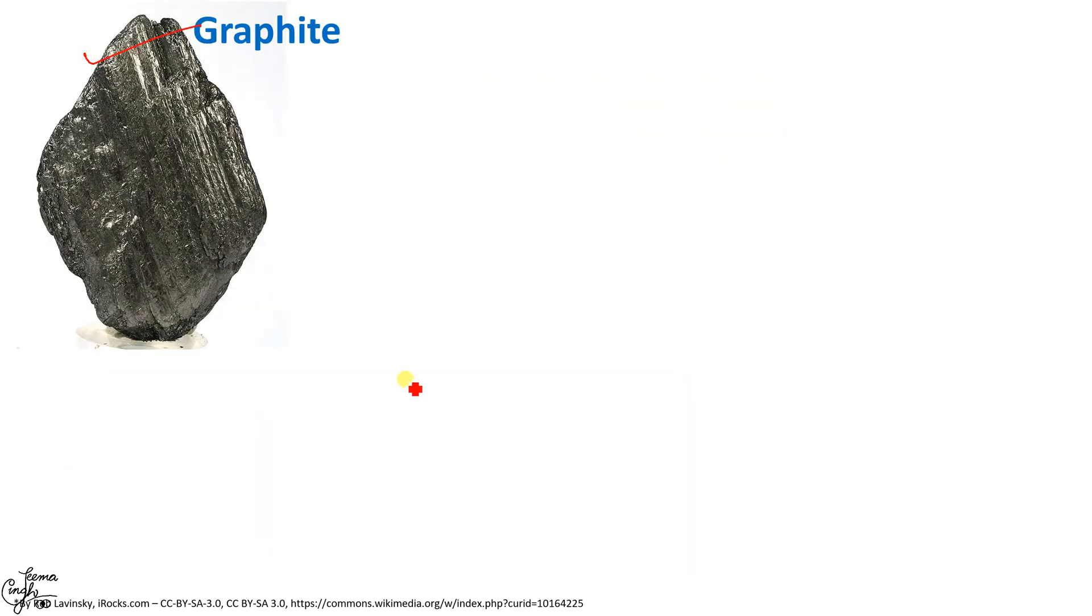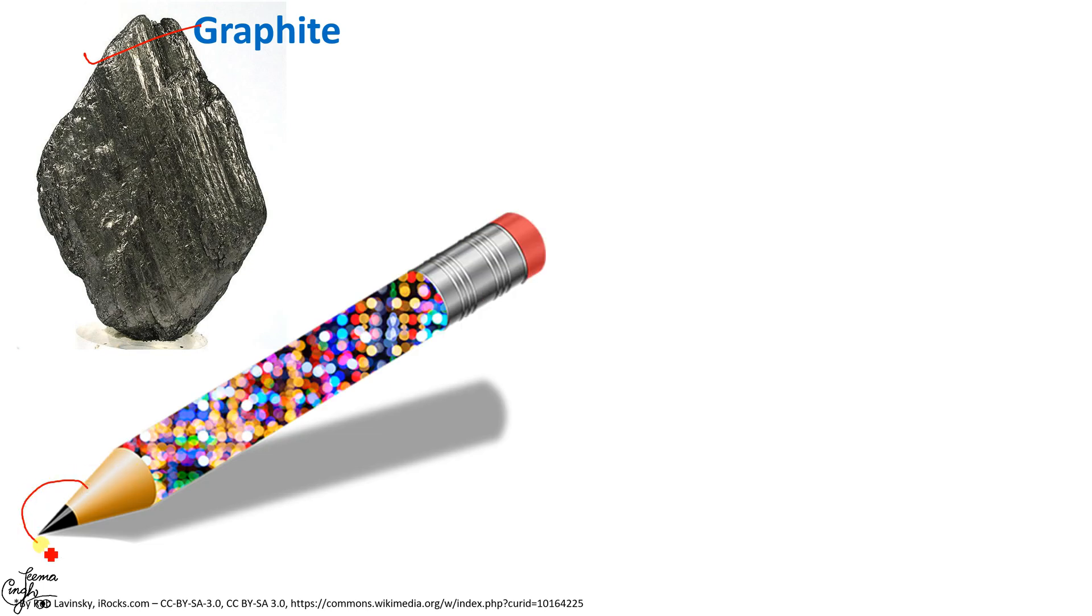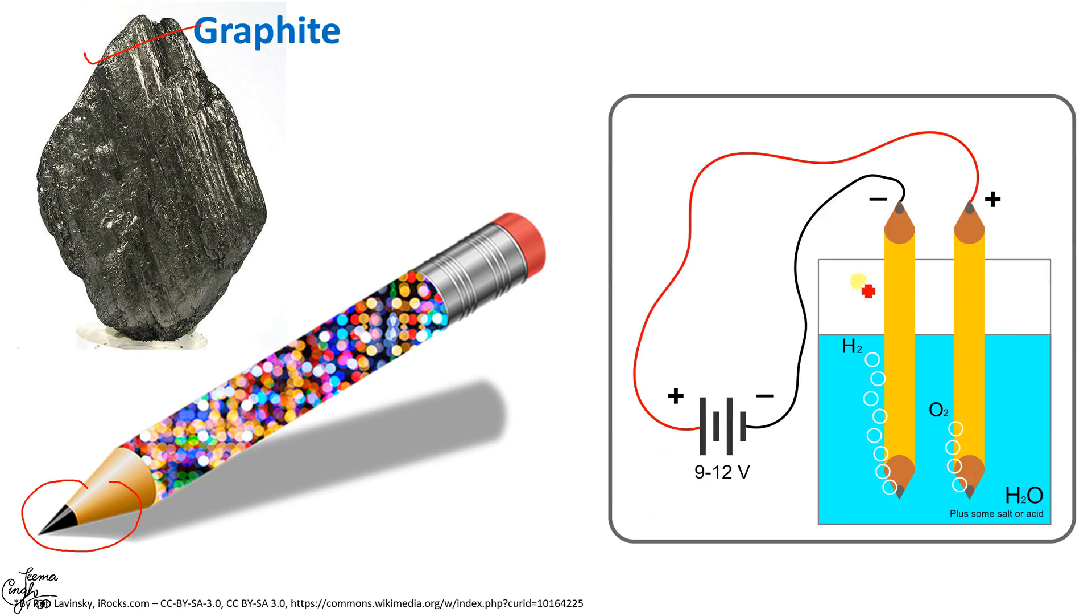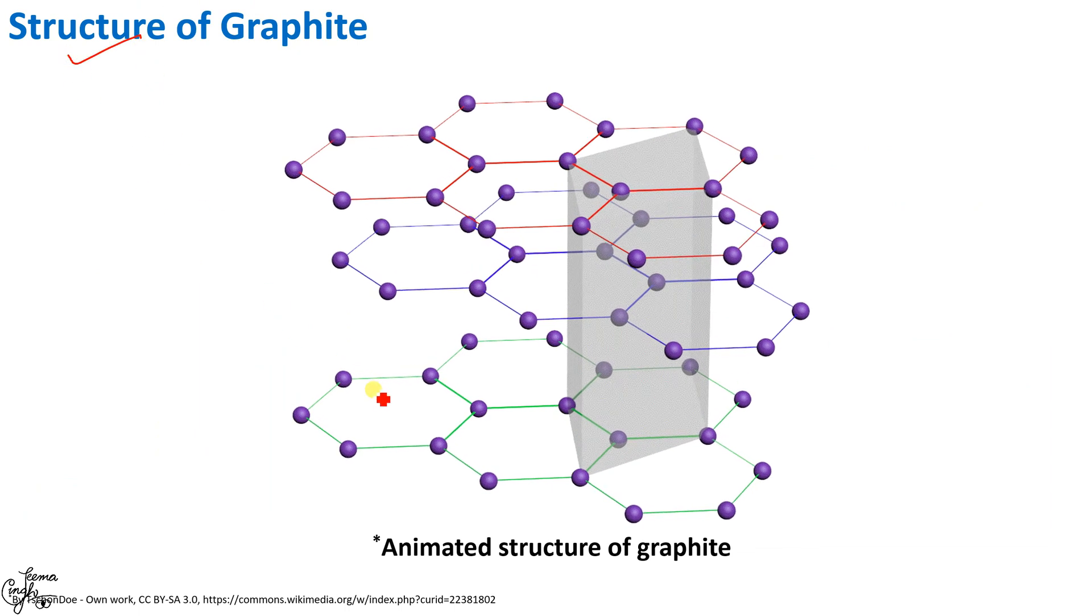These three Allotropic forms of Carbon differ in the way the Carbon atoms are arranged or bonded to each other. Due to different arrangement of Carbon atoms, these Allotropes differ in their physical properties. But as they are all made up of only Carbon atoms, they show similar chemical properties. So remember, Allotropes differ in their physical properties but have almost similar chemical properties. Let us now take each of these Allotropes in detail beginning with Graphite. I am sure you all know that your pencil leads are made up of Graphite. Also, we have learnt in my earlier videos that Graphite is an example of a non-metal which is a good conductor of electricity. Unlike other non-metals which are poor conductors.